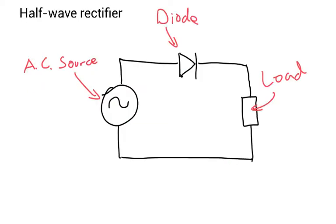One of the uses of a diode is that they can turn alternating current into direct current. One very simple circuit is called the half-wave rectifier. We've got the AC source, so the electricity here is trying to go in both directions. We've got a diode here and then I've drawn a resistor here, but that really could be anything — it could be a light bulb. We're just going to call it the load in this case.